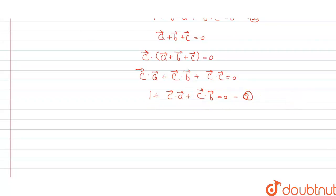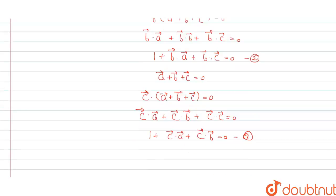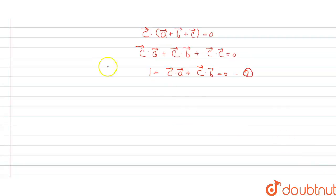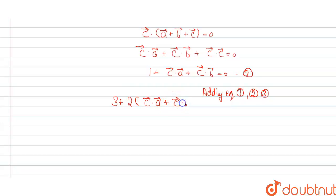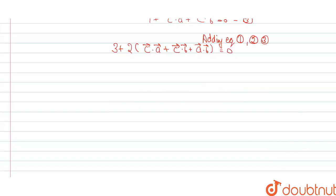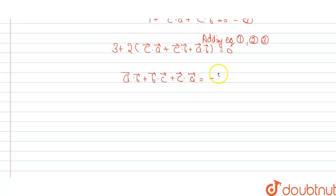Now what we will do is add equation one, equation two and equation three. By adding these three equations, the three ones add to give 3, and we get twice each of a·b, b·c, and c·a. So we get 3 plus 2(a·b plus b·c plus c·a) equal to zero, giving us c·a plus c·b plus a·b equal to minus three by two.